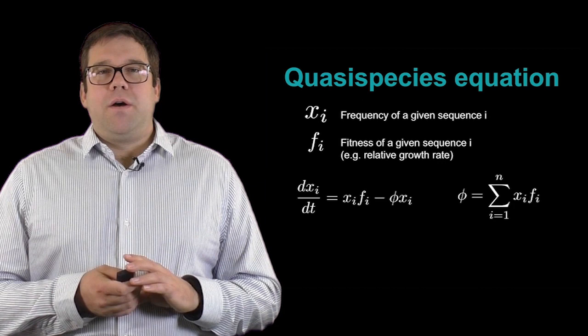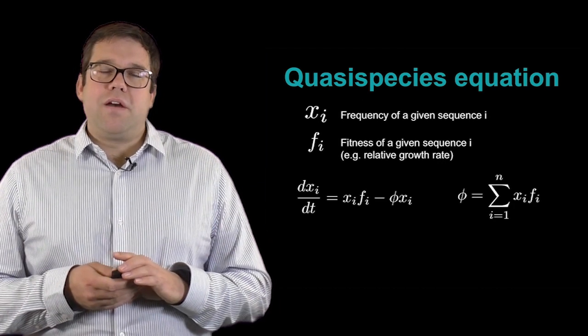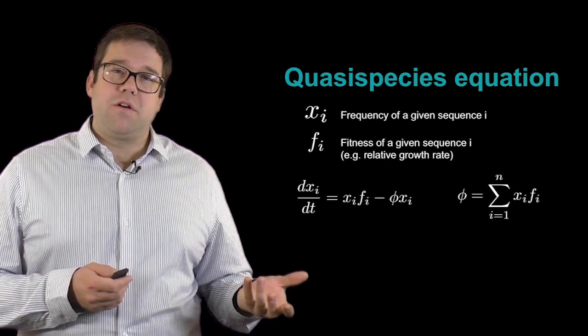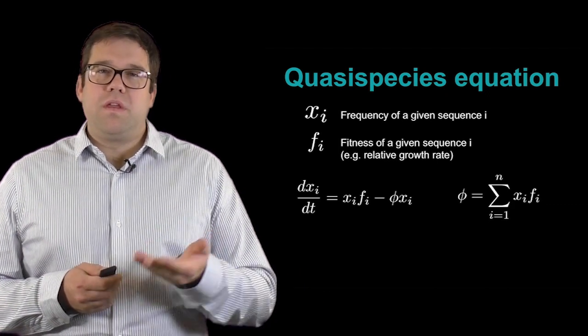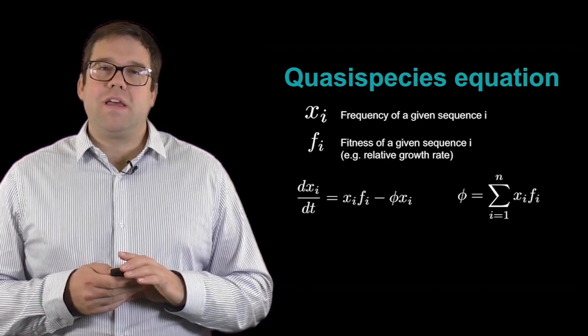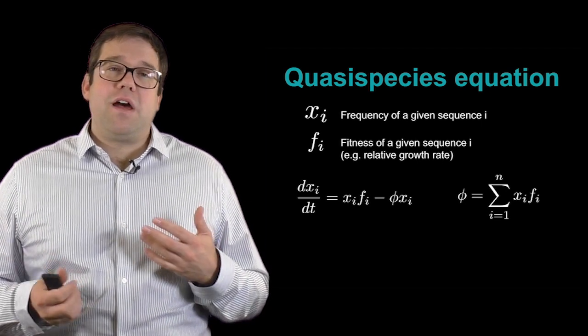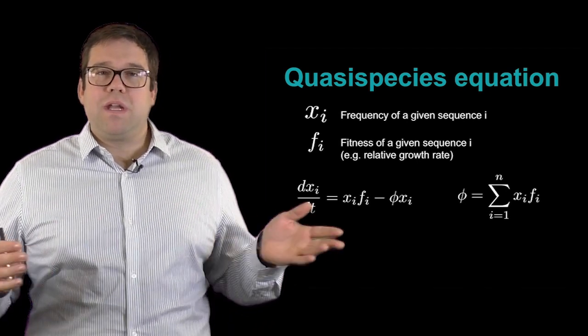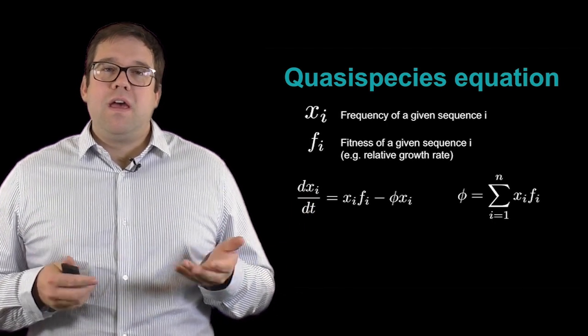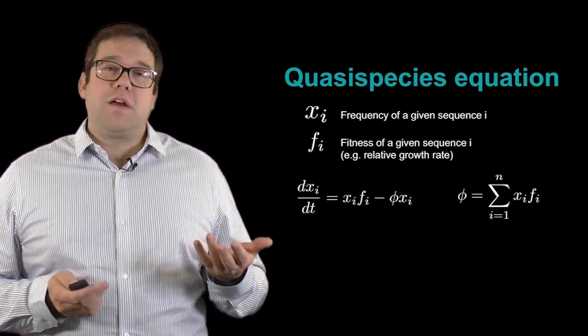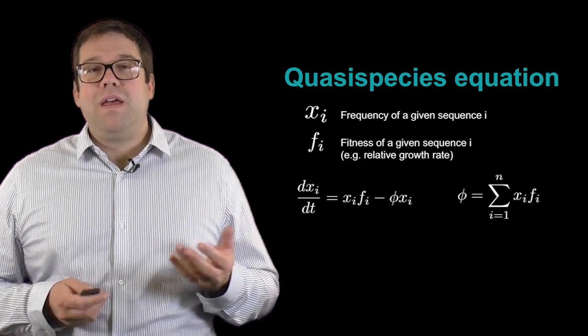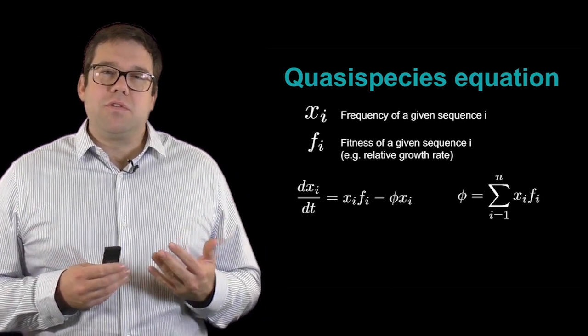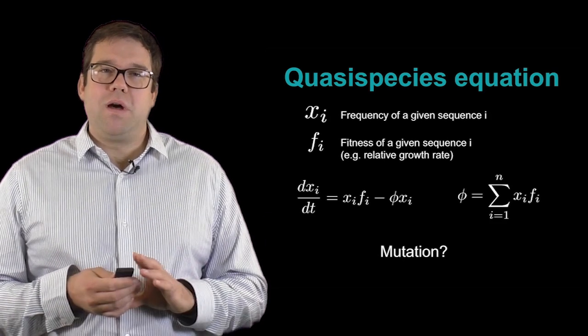Now we have the simple equation again, where we have the rate of change of an individual species equals this birth term minus this death term, where we now know what the definition for phi is. This now allows us to think about how these different sequences would reproduce on a landscape and how we might select for one frequency. However, we're leaving out one of the most important processes there is, which is mutation. We know that variation is one of the central pieces of evolution. So how do we get mutation into this model?